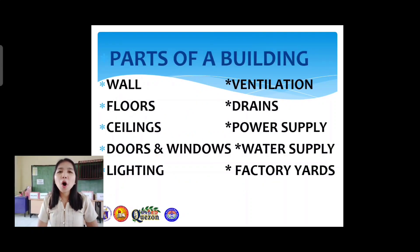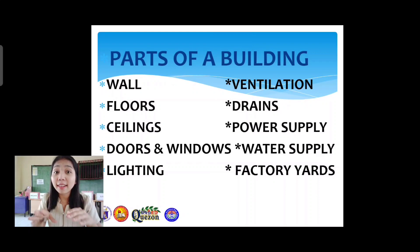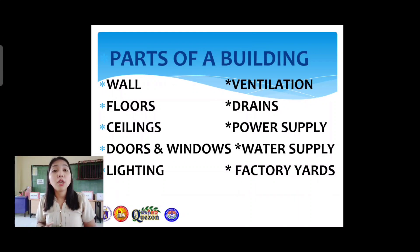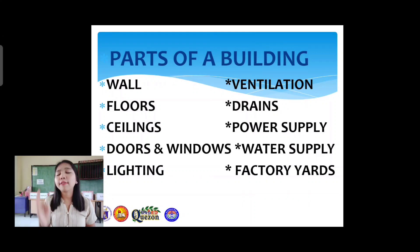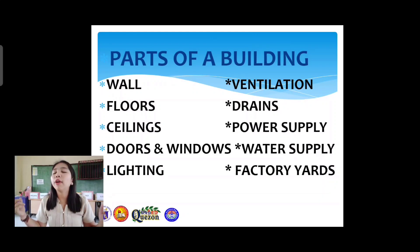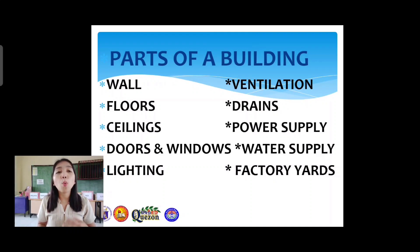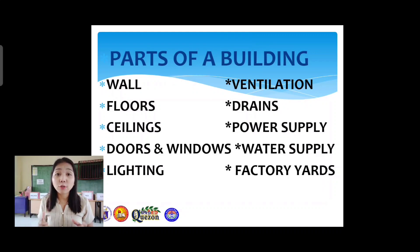Now let's go on to the parts of a building. Since we are talking about the layout, let's look at what's inside that layout. The different parts of a building include the wall, the floors, the ceilings, the doors and windows, lighting, ventilation, drains, power supply, water supply, and factory yards — the most important and commonly found parts.